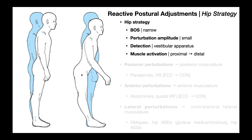What types of things would elicit a hip strategy? If the person's base of support is narrow — so their feet are very close together — recall that in the ankle strategy the feet were either shoulder width or even a little wider apart. With a small perturbation and a narrow base of support, you're more likely to elicit a hip strategy. One example where this occurs without an external perturbation is on a balance beam in gymnastics, where you have to walk with your feet very close together — you're not going to have an ankle strategy because the base of support is so narrow.